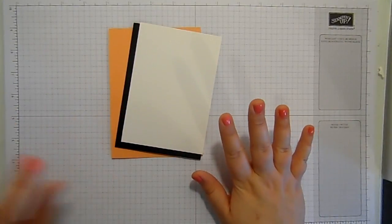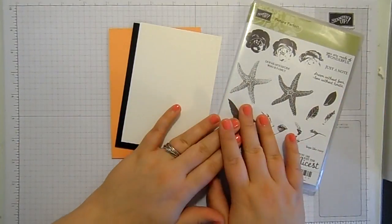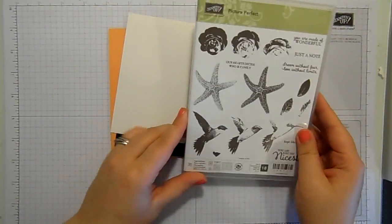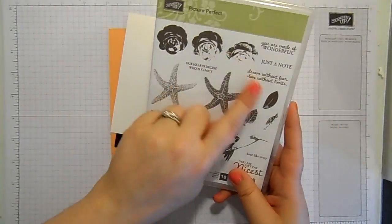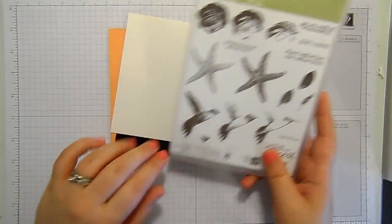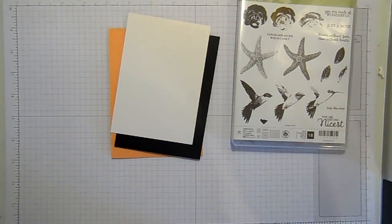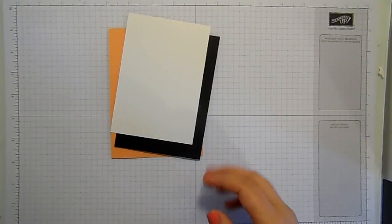So I have got a quick card for you today using one of my favorites in the annual catalog. This is Picture Perfect and I love the layered stamping. But I'm not doing stamp layering today. I'm going to do something slightly different.